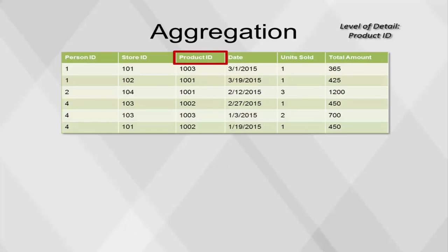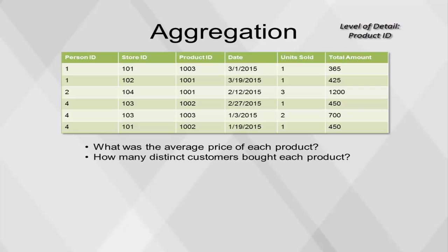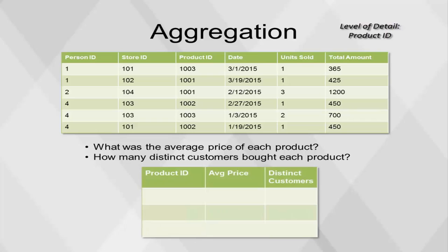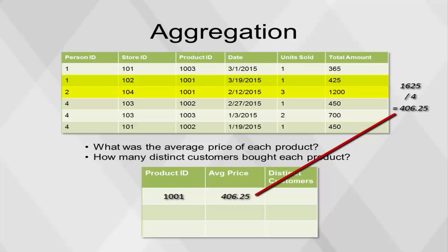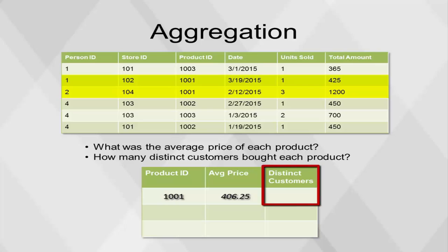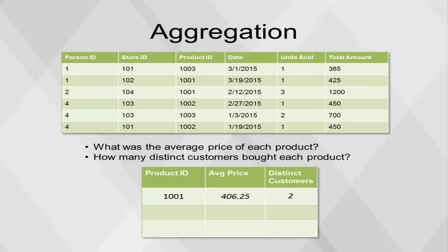Aggregating at the product level of detail can answer basic questions about each product, such as: what was the average price of each product? How many distinct customers bought each product? Starting with product ID 1001, average price is calculated as the sum of the total amount, 1625, divided by the sum of units sold, 4. The final value of 406.25 is populated into the resulting table. Be aware that using an average function in this case would not give us the expected result. Distinct customers is calculated by counting the distinct number of person IDs for product ID 1001 — there are two: person ID 1 and person ID 2. The calculations are then completed for every product ID.